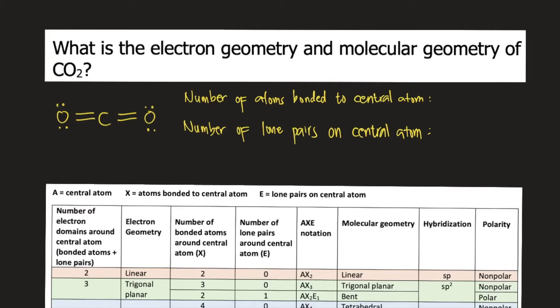What is the electron geometry and molecular geometry of CO2? The first thing you need to do to determine the geometries is to draw the Lewis structure of the molecule. I have drawn the Lewis structure of carbon dioxide on the board.